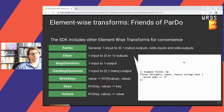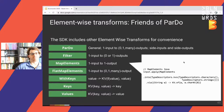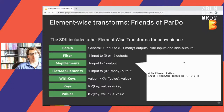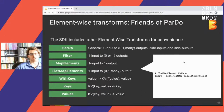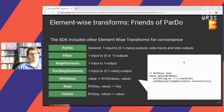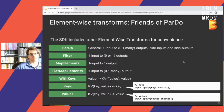Back to friends of ParDo: we can filter elements, map elements — creating key-value pairs — and flat map. Also in Python you can get the keys or values out of things using beam.Keys() or similar. So those are many of the element-wise transformations available in Beam.